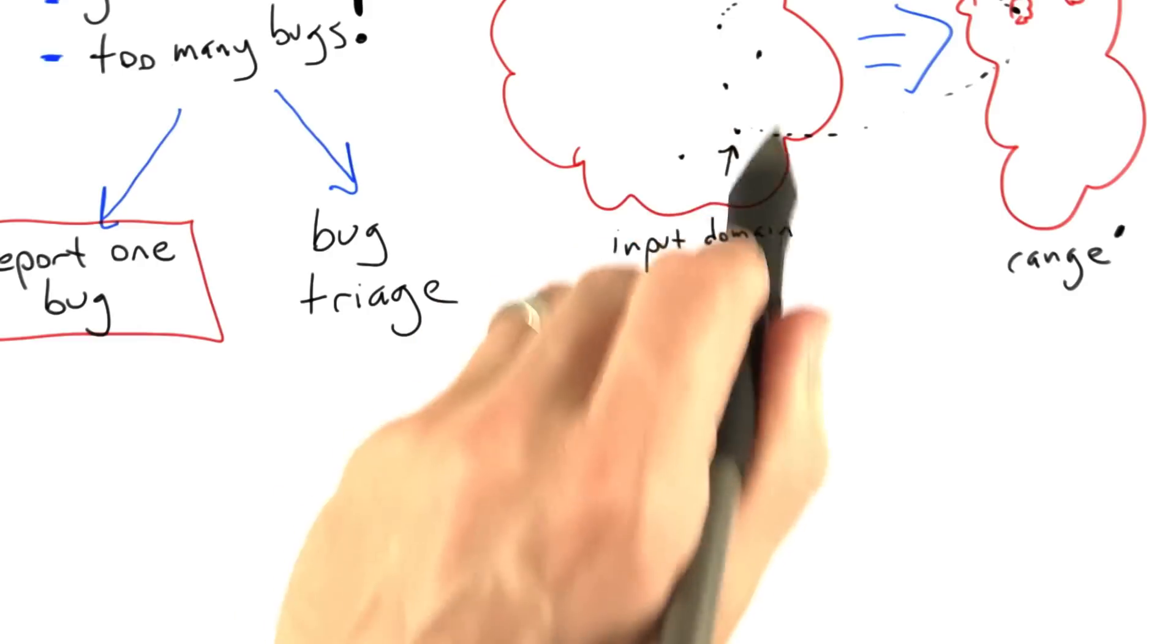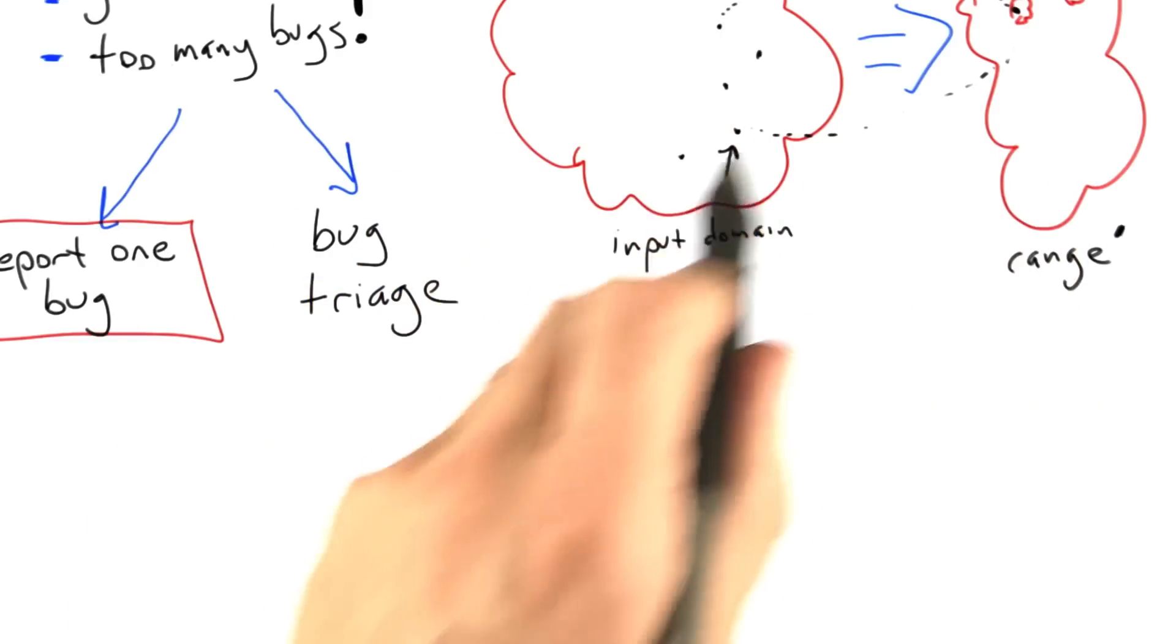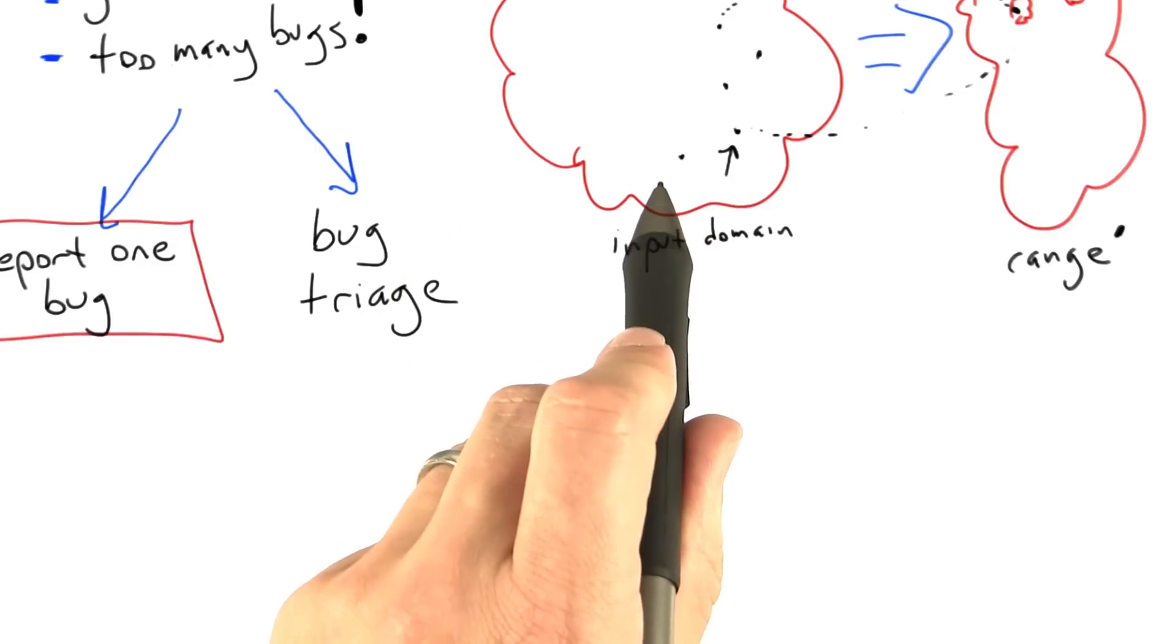Any inputs that trigger separate bugs can be reported in parallel, but if we report all of the bug-triggering inputs that we found, we'll be causing a lot of duplicate bug reports.